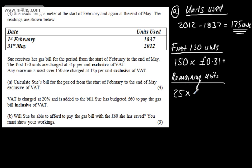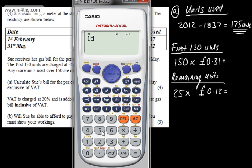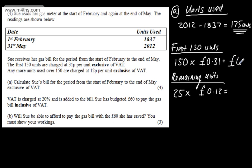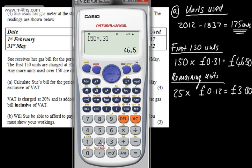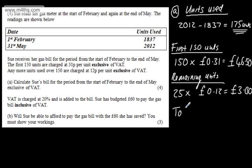The remaining 25 units are multiplied by 12p, or £0.12. Calculating these: 150 multiplied by 0.31 gives £46.50. And 25 times 0.12 gives us £3. So the total will be £46.50 plus £3, which equals £49.50.